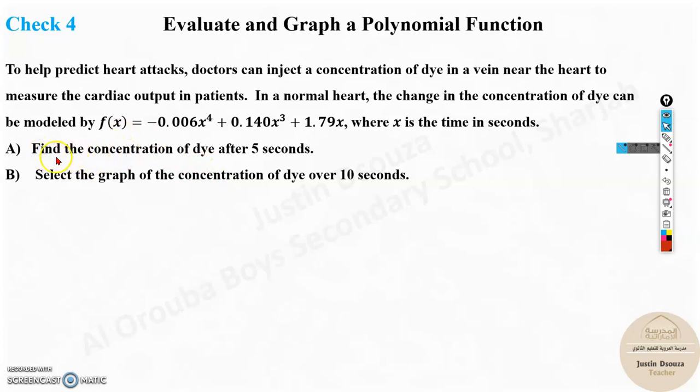They have told, find the concentration of dye after 5 seconds. This x is the time in seconds. After 5 seconds means just put 5 instead of x.